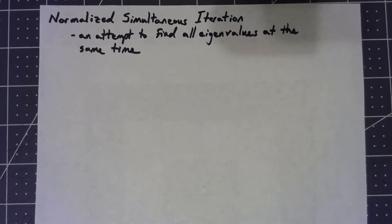The idea behind normalized simultaneous iteration is to find a way that will find all the eigenvalues and all the eigenvectors at the same time. Now there are some limitations on this, we'll get to those at the end, but here's the basic idea.